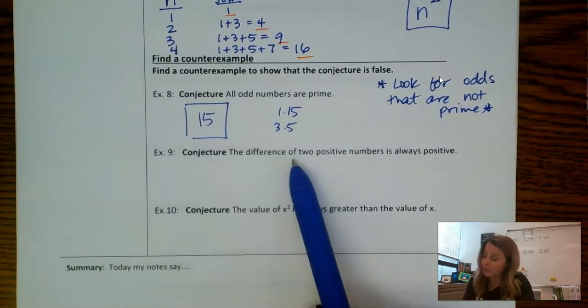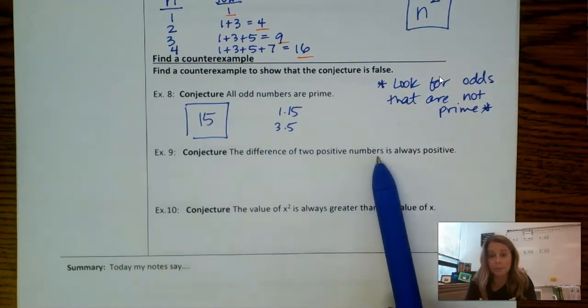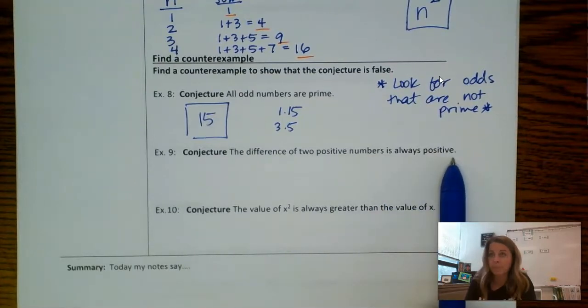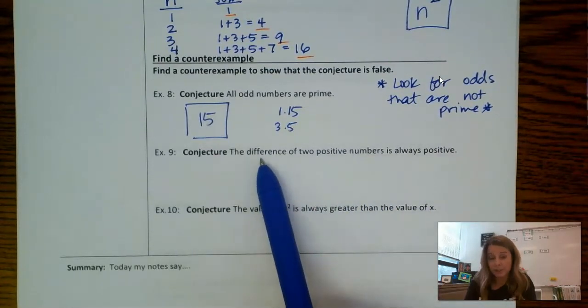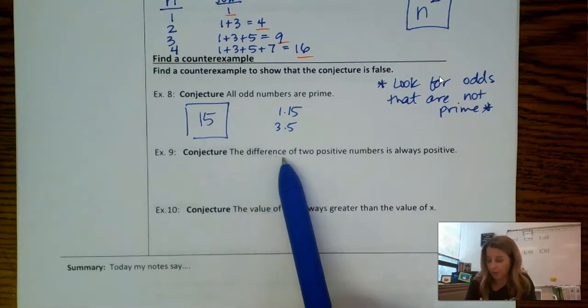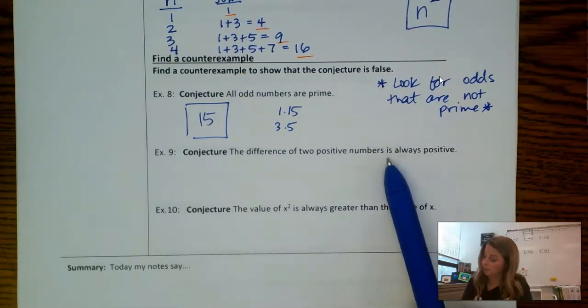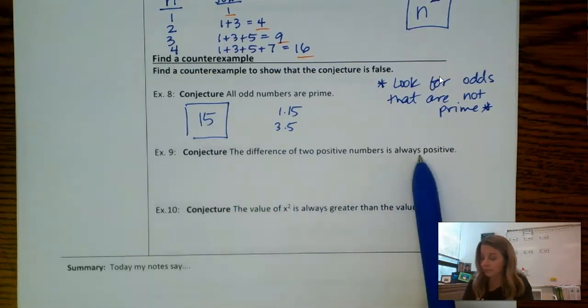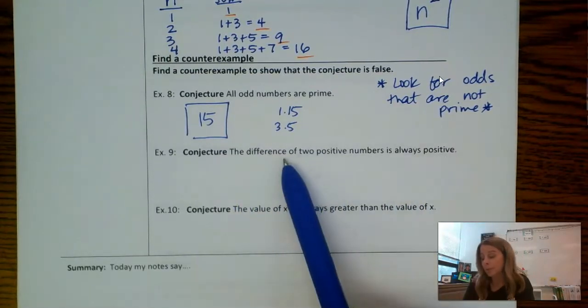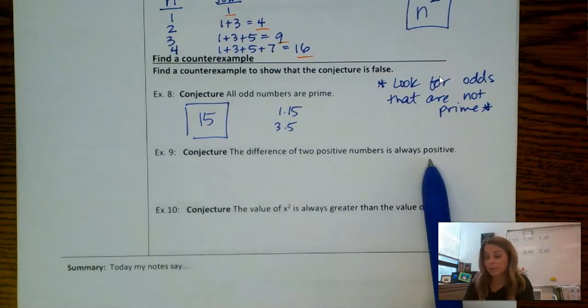Conjecture: The difference of two positive numbers is always positive. So I'm looking for the difference, so you're thinking subtraction, of two positive numbers. Let me read that again. The difference of two positive numbers is always positive. So I'm looking for the difference of two positive numbers that's negative.